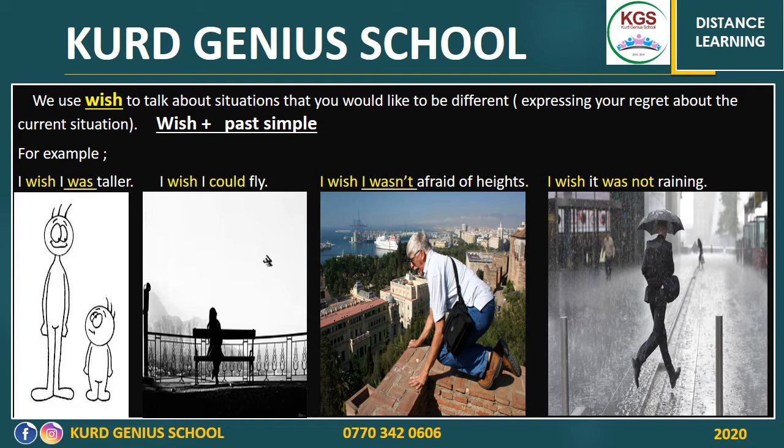Look at the first image — a boy who is not tall. He is not tall, and he's saying this sentence: 'I wish I was taller.' Why is he saying this sentence? Because he's not tall. His situation is that he's not tall, so he uses the word wish in this way: 'I wish I was taller.'